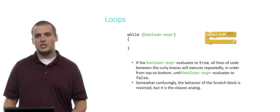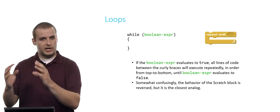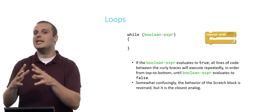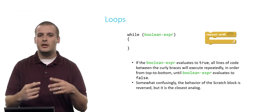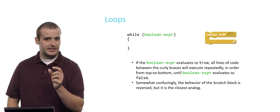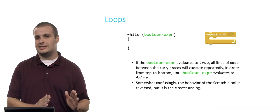Now, somewhat confusingly, the behavior of the Scratch block is reversed, so be really careful if this is your first foray into using loops. Basically the repeat until block in Scratch will repeat something over and over until the Boolean expression in the hexagon is true. So it will keep doing it until it is true. Meanwhile, the while loop will continue to do it until it is false. So they're quite similar, but there's that little distinction just to be careful of, especially as you make your first transition from Scratch into C.